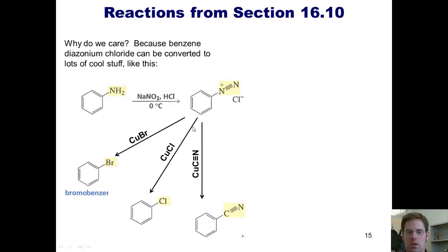I can also take benzene diazonium chloride and treat it with copper cyanide to get phenylacetonitrile. This compound, phenylacetonitrile, is not accessible directly in one step from benzene itself. In other words, you can't directly take benzene and do a substitution reaction to put a C triple N onto it. So how in the world do you get a C triple N on benzene? You have to go through this sequence.